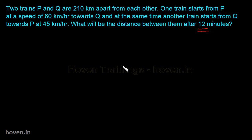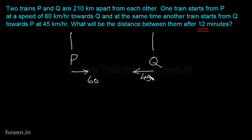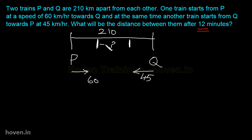We need to find the distance between the two trains after 12 minutes. Draw the diagram: P on one side, Q on the other, speed 60 from P, speed 45 from Q, and the initial distance is 210 km. After 12 minutes, P has moved to a new position and Q has moved towards P — we need to find the remaining distance between them. As we saw earlier, the distance between them is reducing at 105 km per hour.